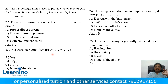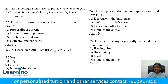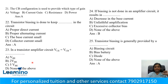Question number 23: In a transistor amplifier circuit, VC is equal to VCB plus what? Options: VB, 2VB, 5VB, none. Simple question — correct answer is Option A: VB.